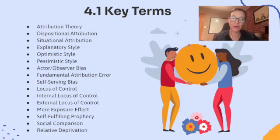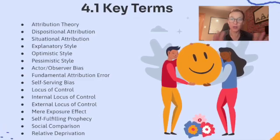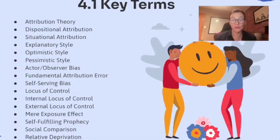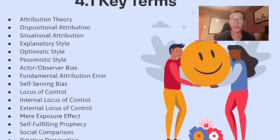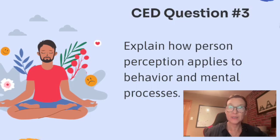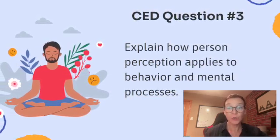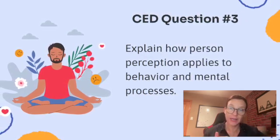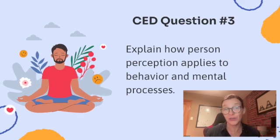So these are the key terms for Unit 4.1, covering all three parts of the CED questions. This is going to be on a separate video with definitions and real-life examples to make it easier for you to make your flashcards and prepare for either the AP exam or a unit test. So the third CED question that the College Board put into this unit is: explain how person perception applies to behavior and mental processes.